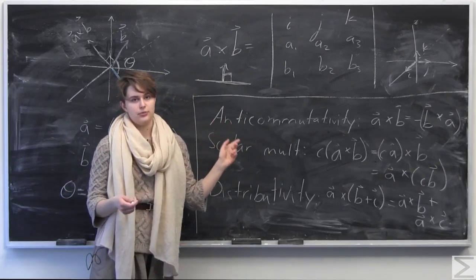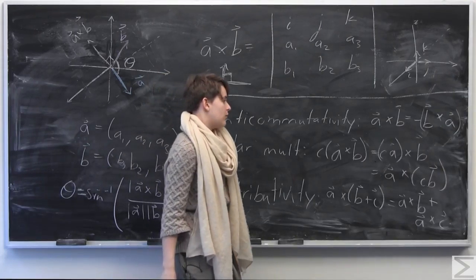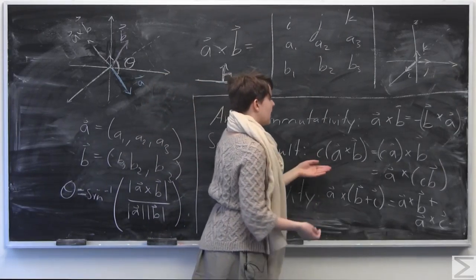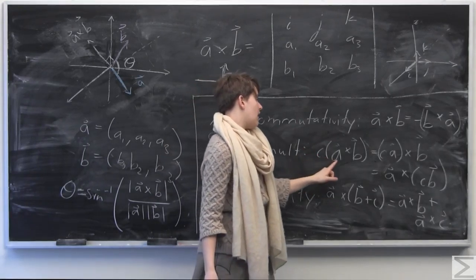So this is very important, because we can't just arbitrarily flip around things like we can in the dot product, because that would be flipping rows here and inverting our signs in the final answer. So it's important to take the cross product in the order in which the vectors are presented.